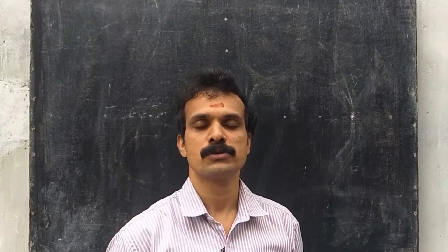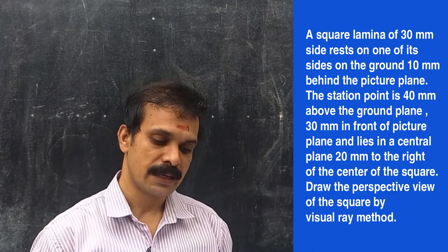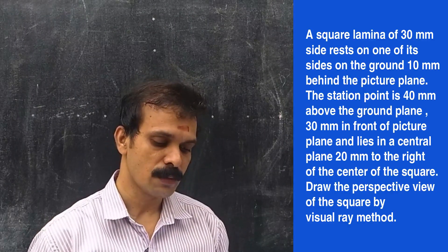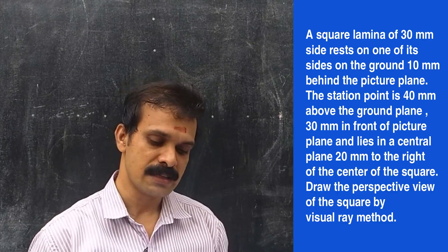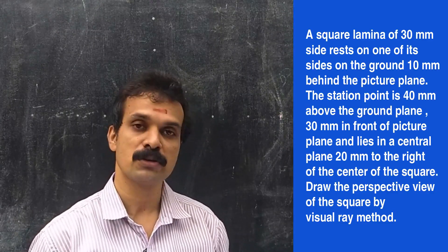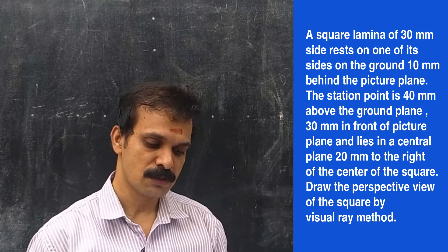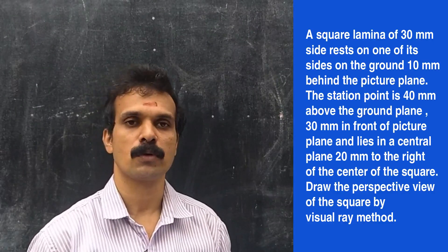Hello all. We are moving to the first problem of perspective projection. The problem is: a square lamina 30 mm side rests on the ground 10 mm behind the picture plane. The station point is 40 mm above the ground plane, 30 mm in front of the picture plane, and lies in a central plane 20 mm to the right of the center of the square. Draw the perspective view of the square by the visual ray method.